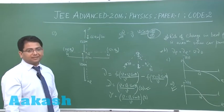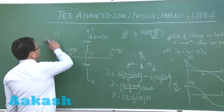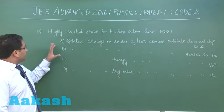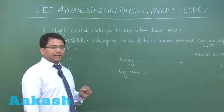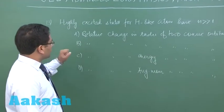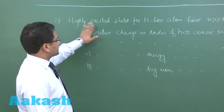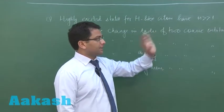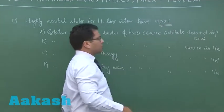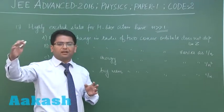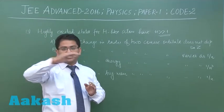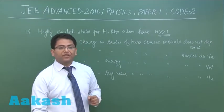Now we'll go to question number 13. Question number 13 is from modern physics and slightly deviated question, not usual one that you find in book. Highly excited states for hydrogen-like atoms have n very very much greater than one. So right here when n is very very large the orbitals can be taken as continuous because the gap between them would be very very less.